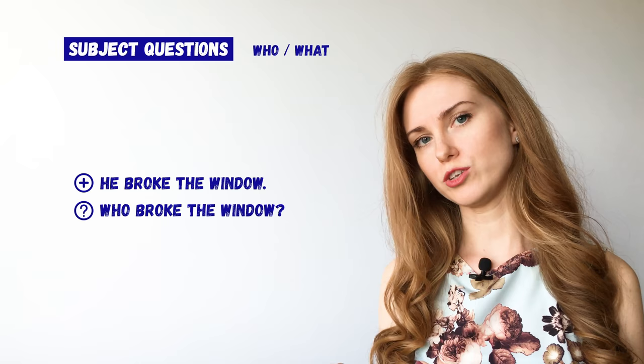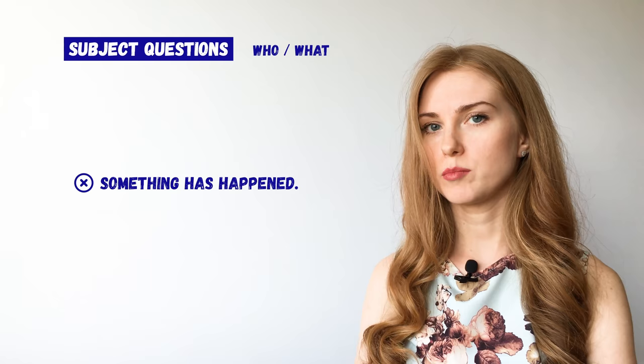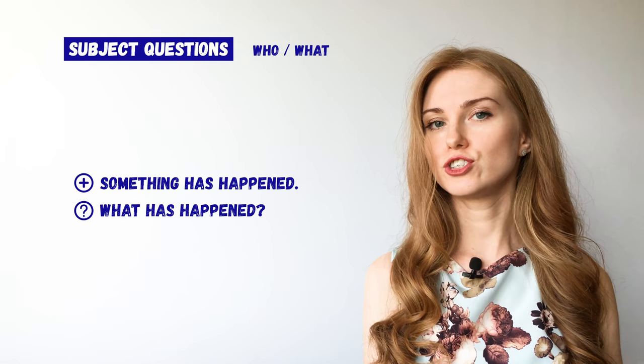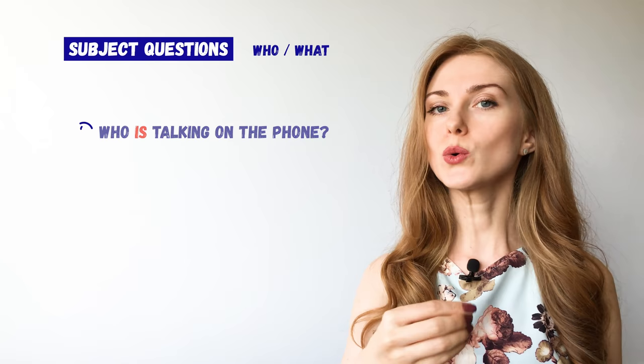Something has happened — What has happened? So 'who' and 'what' are subjects in these questions and we have to treat them like we would treat 'he', 'she' and 'it'. Which means we have to use 'is' not 'are'. So we say 'who is talking on the phone', not 'who are'. Or 'who likes apples', not 'who like apples'.